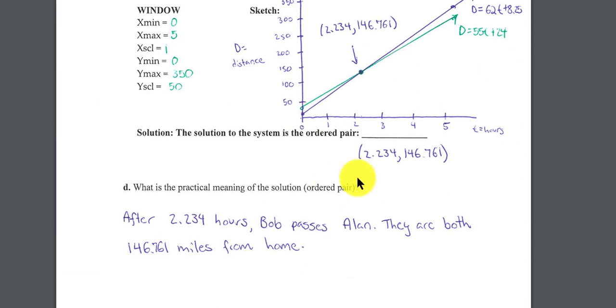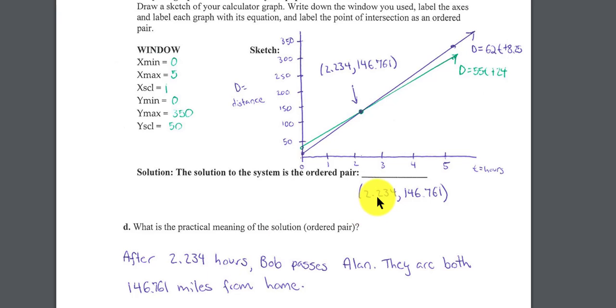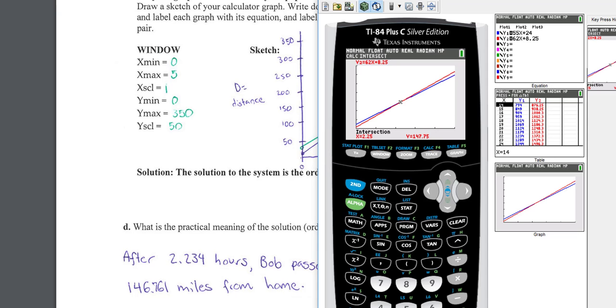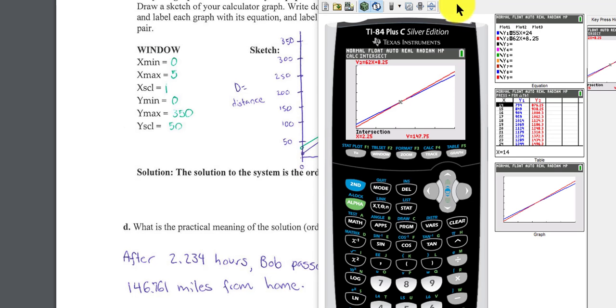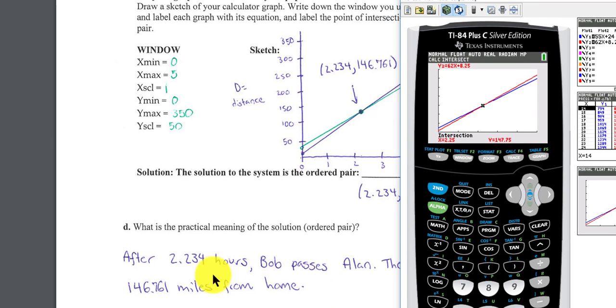Well, after 2.2 hours, both Bob and Alan will be 146.7 miles away from home. And it looks like they had some kind of rounding issue, because we get exactly 2.25, 147.75. So the practical meaning should be at 2.25 hours, they are both 147.75 miles from home.